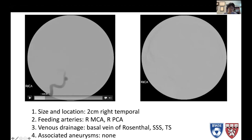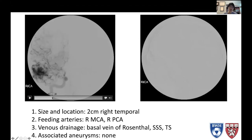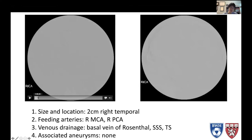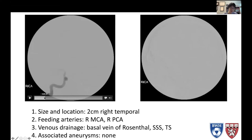This is a video of the angiogram — a right internal carotid artery injection in the anterior-posterior view. The thing to know about an angiogram is that it's basically a movie. You start in the arterial phase, where you see the internal carotid artery going up. As the movie runs on, here are the middle cerebral arteries feeding the AVM, which is this tangle right here. So you see the AVM in the arterial phase.